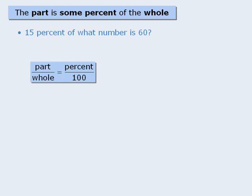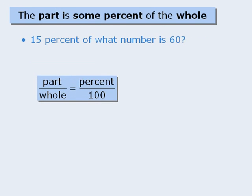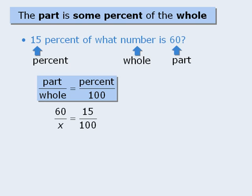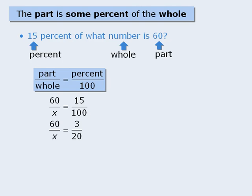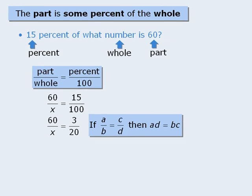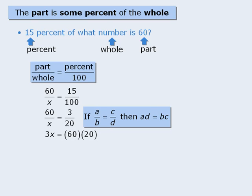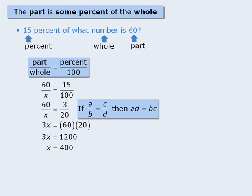Let's try another one: 15% of what number is 60? Here 15 is the percent, and the number we are finding 15% of is the whole, which means 60 is the part. When we plug these values into the formula, we get the following. Since we don't know the value of the whole, we let x represent the whole. We simplify the right-hand side by dividing top and bottom by 5 to get 3 over 20, then cross-multiply, simplify, and divide both sides by 3 to get x equals 400. So 15% of 400 is equal to 60.